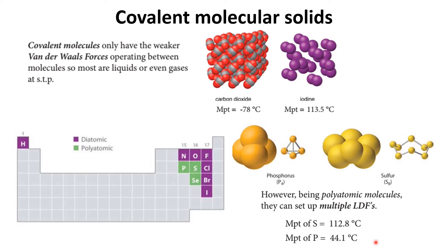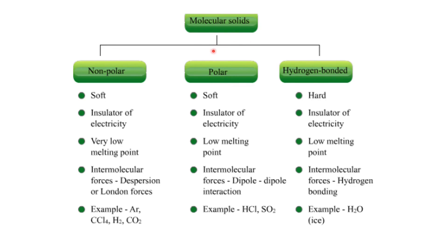The melting point of sulfur is 112.8°C and for phosphorus it is 44.1°C. Molecular solids can be of three types: non-polar, polar, or hydrogen-bonded. The non-polar and polar molecular solids are soft, while the hydrogen-bonded molecular solid is harder because hydrogen bonding is stronger. All three types are poor conductors and have low melting points. In non-polar molecular solids the intermolecular forces are London dispersion forces; in polar molecular solids they are dipole-dipole interactions; and in hydrogen-bonded molecular solids they are hydrogen bonds. Examples: non-polar — Ar, CCl₄, H₂, CO₂; polar — HCl, SO₂; hydrogen-bonded — water (ice).